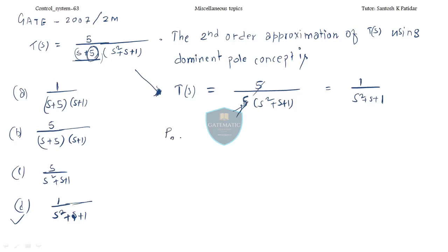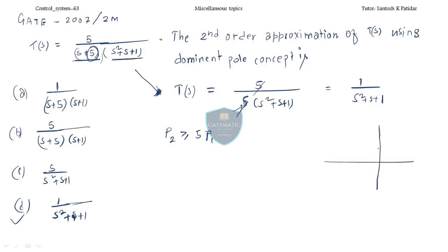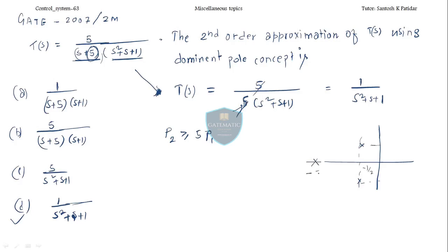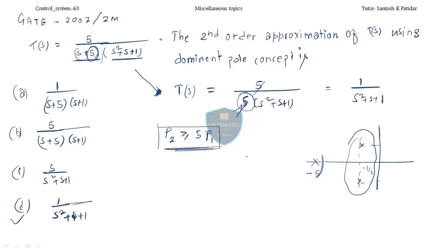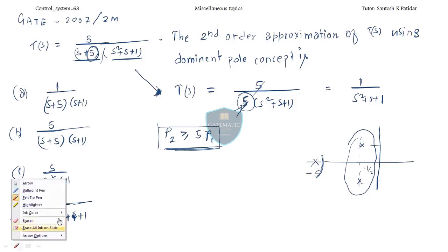The procedure to remove a non-dominant pole: when the pole at −5 leaves the system, it contributes its constant value (5) to the gain. So the 5 in the numerator and the 5 from (S+5) cancel each other, leaving the approximated transfer function as 1/(S² + S + 1). This is your answer — a 2-mark problem that takes about 15 seconds.